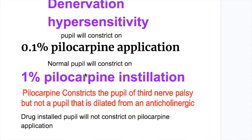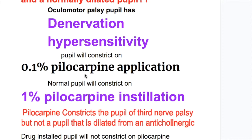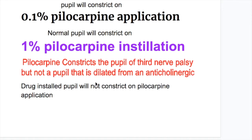To differentiate between an oculomotor nerve palsy dilated pupil and a normally dilated pupil: the oculomotor dilated pupil has denervation hypersensitivity and will constrict on 0.1% pilocarpine application — a very weak strength, one-tenth of that which normally constricts the pupil. The normal pupil constricts on 1% pilocarpine instillation. Importantly, pilocarpine constricts the pupil in third nerve palsy but not a pupil dilated from an anticholinergic agent.